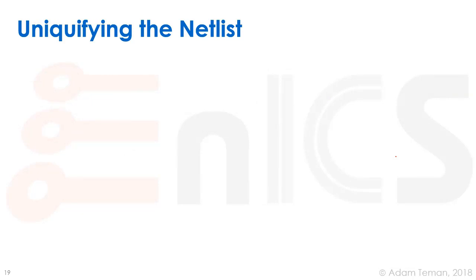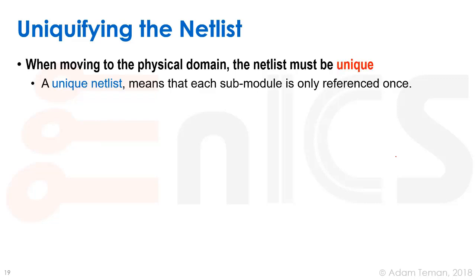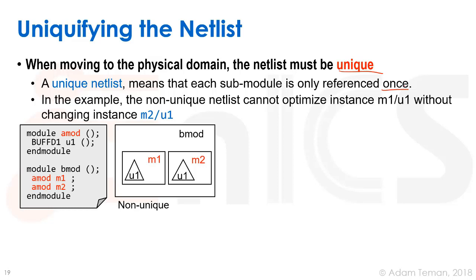Uniqueification — making the netlist unique — means each sub-module is referenced only once. When writing Verilog hierarchically, we might write a module B with two instantiations of module A (m1 and m2). This is a non-unique netlist because a_module is referenced twice. We need to uniqueify it.